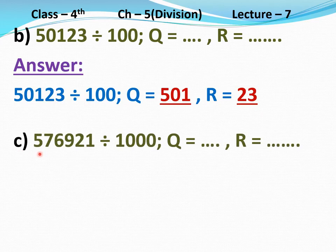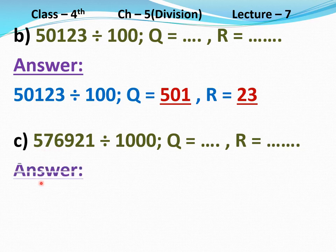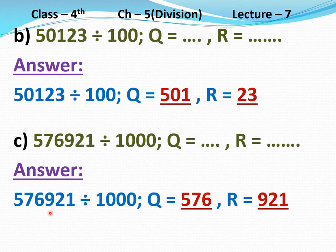Part C: 5,76,921 divided 1000. The divisor is 1000, so the last three digits — 9, 2, and 1 — form the remainder 921. The remaining digits — 5, 7, and 6 — form the quotient 576. Answer: Quotient equal to 576, Remainder equal to 921.